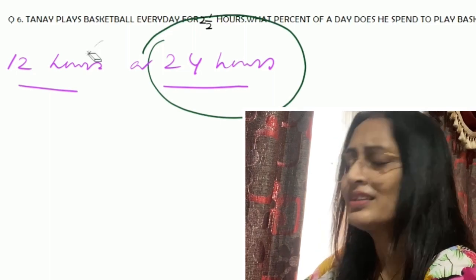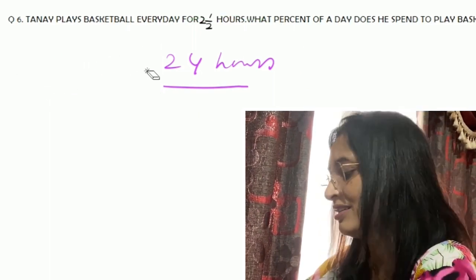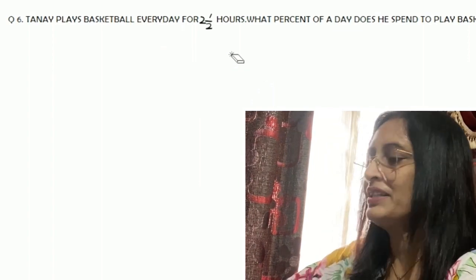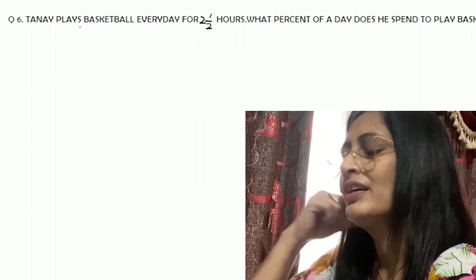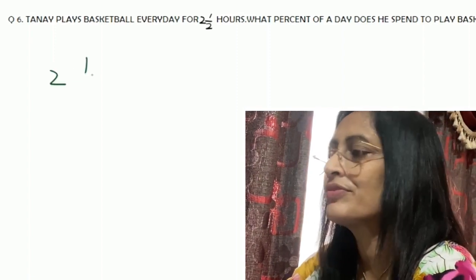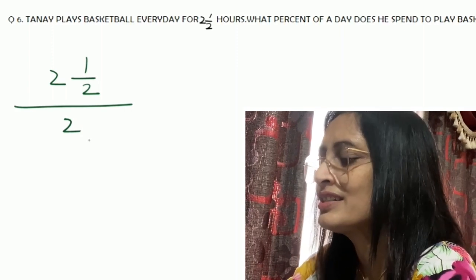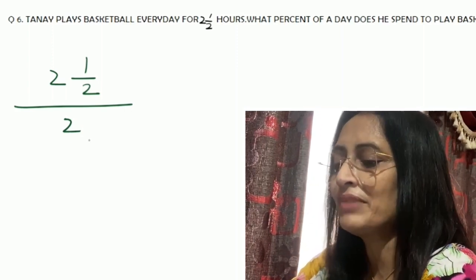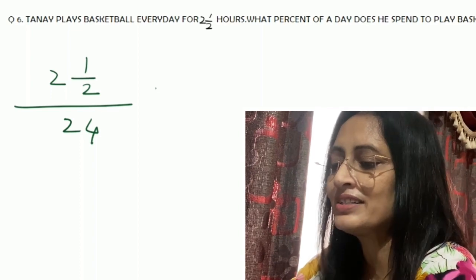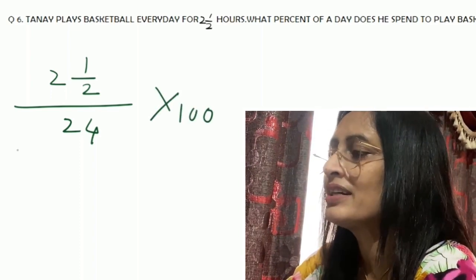24 hours ke baad hamara jo din ka cycle hai, ye start hota hai. Raat mein hum nahi khelte, toh kya hua? Woh bhi toh us 24 hours mein hi included hai na. So just remember, in this type of questions we'll have to think it like: in every day we are getting 24 hours, and out of 24 hours, Tanay plays 2 and half hours. So we are writing like this, and so this was the main part of the sum.